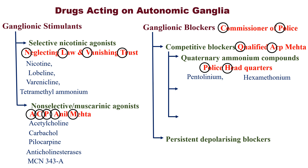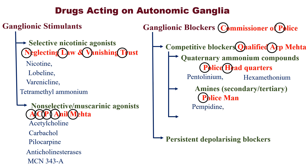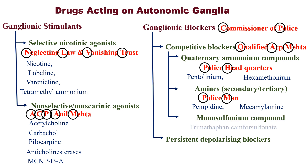A stands for amines, and this Mehta is a policeman. P for Pempidine, M for Mecamylamine. Finally, M stands for monosulfonium compound — example is Trimethaphan Camphorsulfonate.